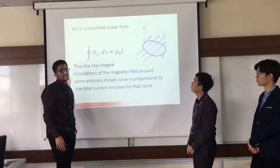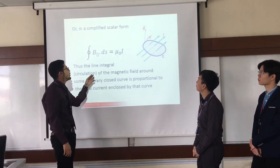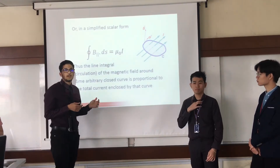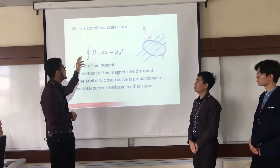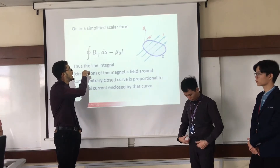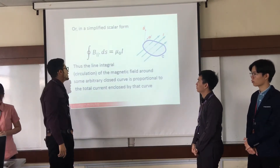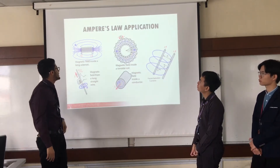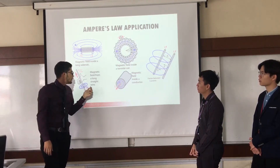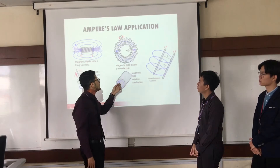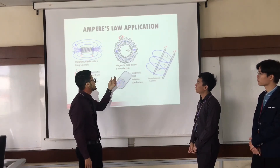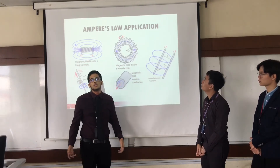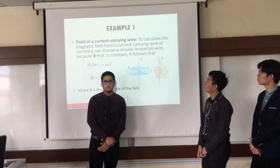We can simplify it by writing it in scalar form, where it gives us B in parallel with the direction. Since it is parallel, we can remove the vectors and write it as the integral of the closed path of the magnetic field and the direction. The most important applications of Ampere's law include: the magnetic field inside a long solenoid, the magnetic field from a long straight wire, the magnetic field inside a conductor, the magnetic field inside a toroidal coil, and the forces between currents. My colleagues will continue by showing some examples.